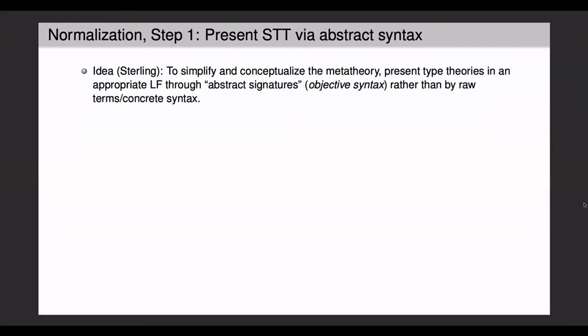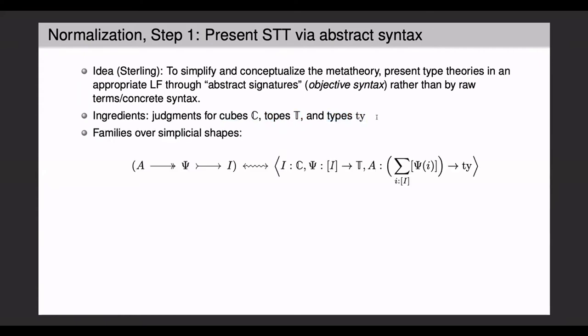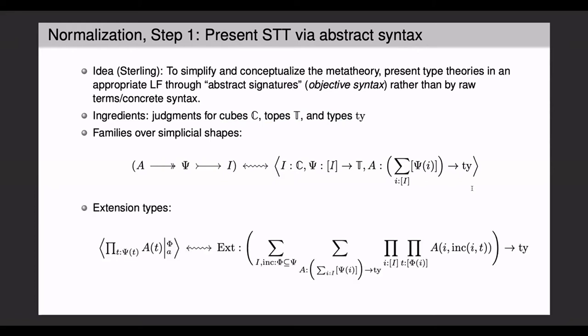So the first step is to present our type theory via an abstract syntax. And this can be done using a framework of signatures, for which again exists a type theory. So we start with two basic forms of judgment that something is cube, a tope, or a type. Then families over a tope can be presented using this type theory of signatures.